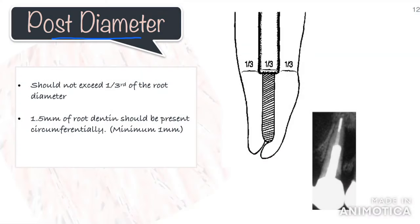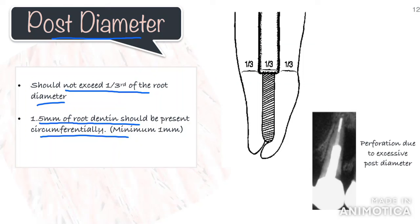Next, we come to post diameter. Ideally, the diameter of the post should not exceed one-third of the root diameter, and 1.5 mm of dentine should be present circumferentially, with 1 mm being the minimum. Otherwise, you will be inviting the potential of fracture. You have to especially take care in the apical surface of the root where it becomes narrower.